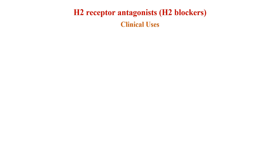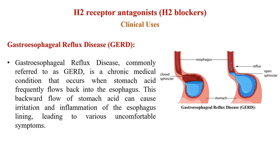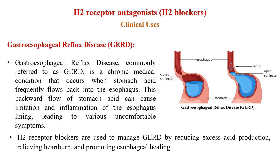Now we will study the clinical uses individually. First is gastroesophageal reflux disease, or GERD. GERD is a chronic medical condition that occurs when stomach acid frequently flows back into the esophagus — the food pipe. This backflow of acid can cause irritation and inflammation of the esophageal lining, leading to various uncomfortable symptoms. These blockers are used to manage GERD by reducing excess acid production, relieving heartburn, and promoting esophageal healing.